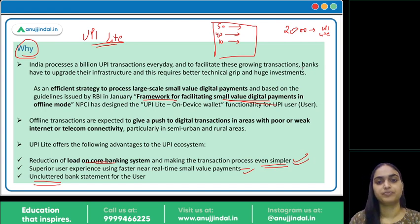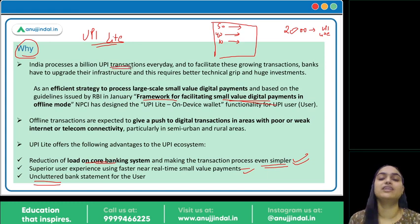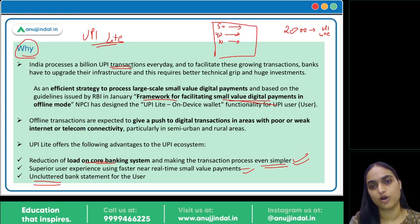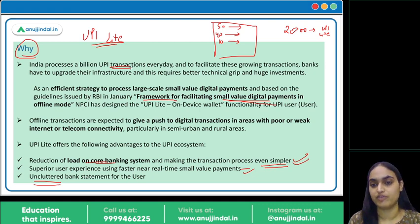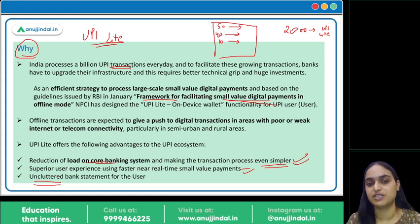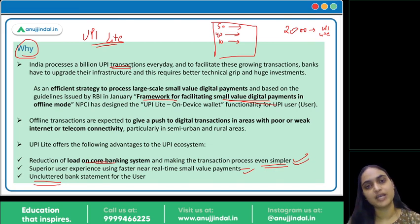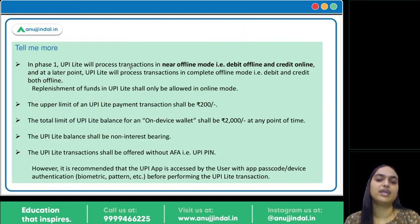If we want to make UPI transactions even faster, one option is to process small value transactions in offline mode to reduce the load on the core banking system. Another option would be for all banks to update their infrastructure and technology, but that would require a huge amount of investment. So as an alternative, this mechanism — the RBI framework — has been introduced, and UPI Lite is being implemented to realize that framework.